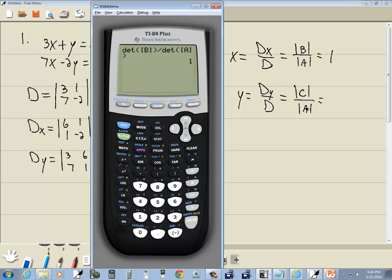Now for y. That's the determinant of C over the determinant of A. So go back to the matrix menu, second x to negative 1, right arrow to math, enter on det.